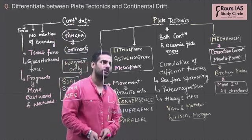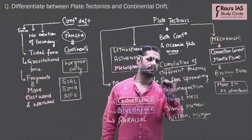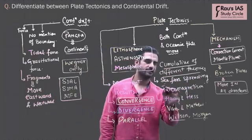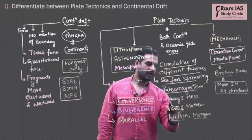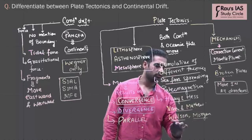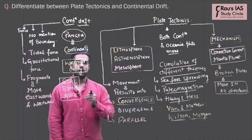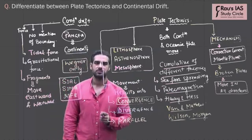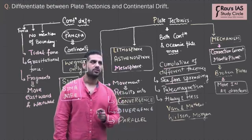Whereas when we talk about the plate tectonics theory, it is cumulative of different theories like sea floor spreading, paleomagnetism given by Harry and Hess, Van and Matthew, Wilson and Morgan. This is the first difference.